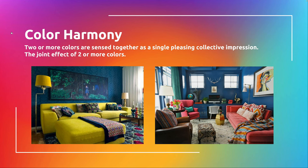Then we have color harmony — a color relationship that comes up a lot in interior design and design in general. Color harmony is basically two or more colors sensed together in a single pleasing collective impression. It doesn't necessarily have to be as intense as this one on the left.